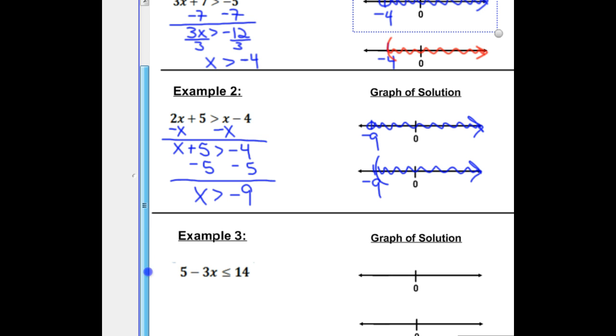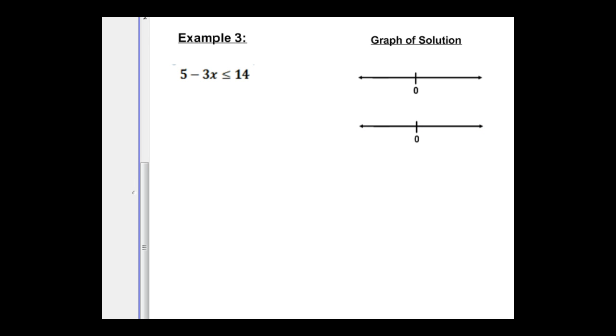Let's try one more example. Okay, so we're going to solve 5 minus 3x less than or equal to 14. We'll begin by subtracting 5 from both sides. We have negative 3x is less than or equal to 9. And now we have to divide both sides by negative 3 to get the x by itself. But remember, when you divide through by a negative quantity, it changes the direction of the inequality.